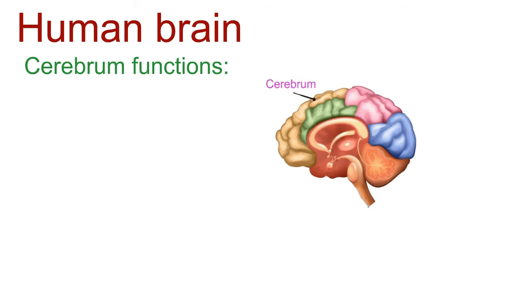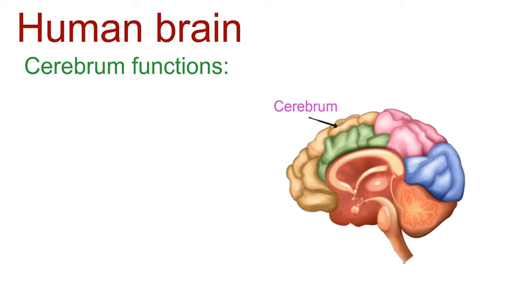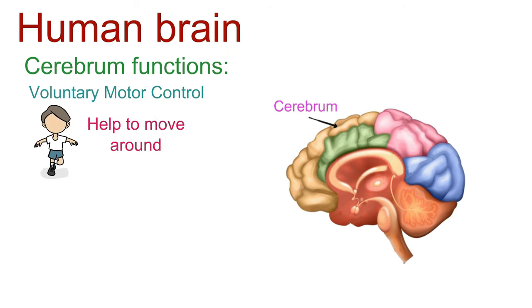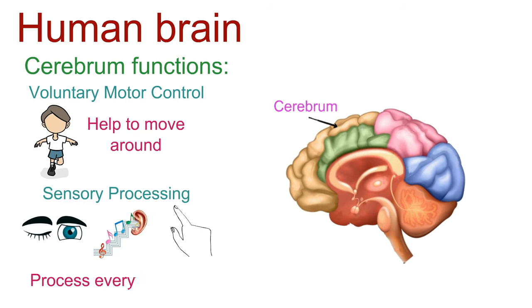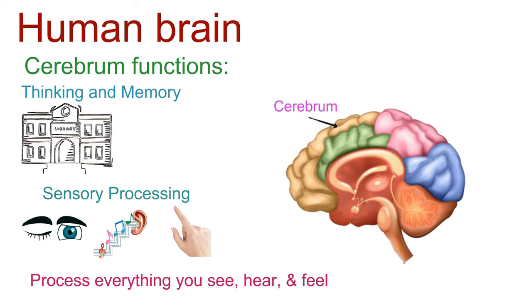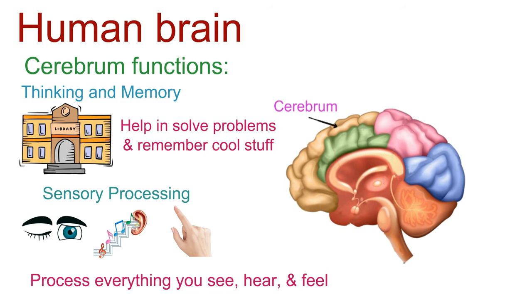The cerebrum has some killer functions. It's your personal joystick for moving around. It's like the brain's own movie theater, processing everything you see, hear, and feel. Think of it as the brain's library, helping you solve problems and remember cool stuff.